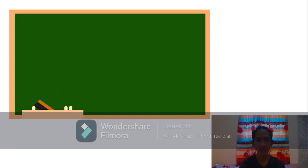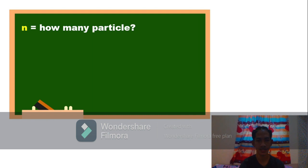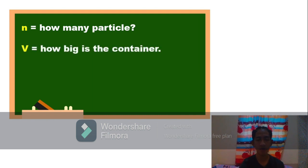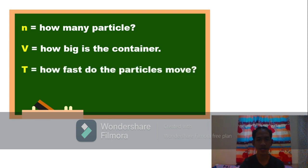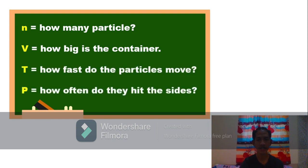In all, mole tells us how many particles. Volume tells us how big is the container. Temperature tells us how fast the particles move. And pressure tells us how often they hit the sides.